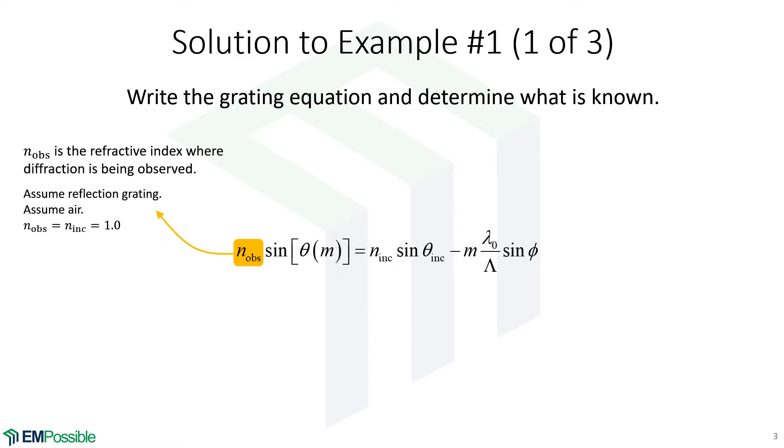So the first, the refractive index where we are observing the diffraction. They didn't tell us in that problem whether it's transmitted or reflected or somewhere else we're observing the diffraction. So whenever that happens, always assume it's the reflected modes that are being studied. That's typically how gratings are used anyway, on the reflection side, not the transmitted side.